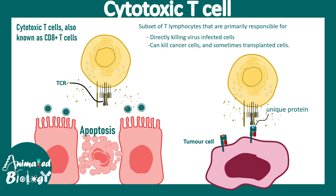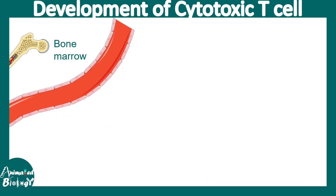So the moral of the story is these cells play two important roles: one is killing virus-infected cells, and the other is taking an active part to eliminate cancer or tumor cells. Now let's zoom into the whole picture — where do these cytotoxic T cells come from, where are they born, and how do they develop?